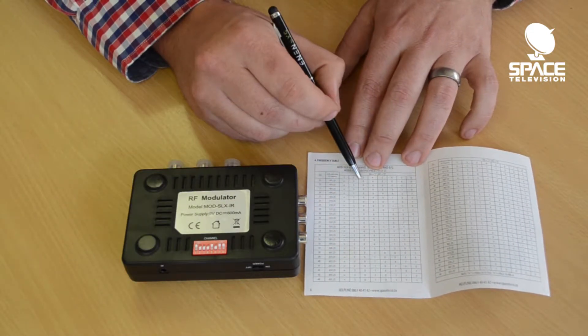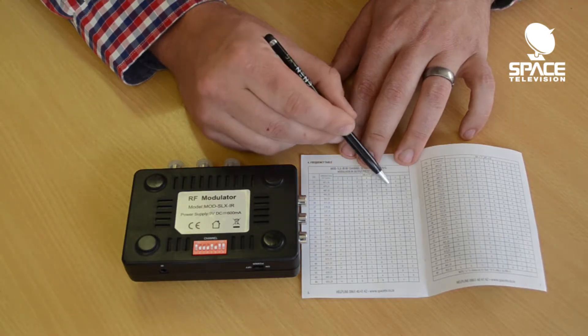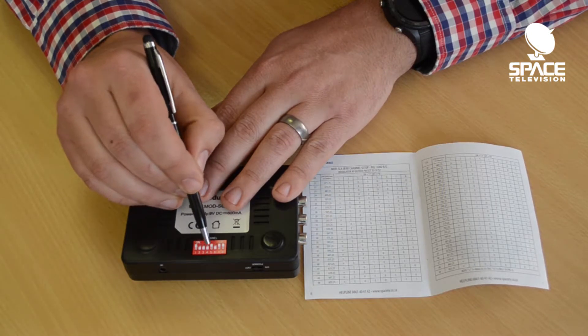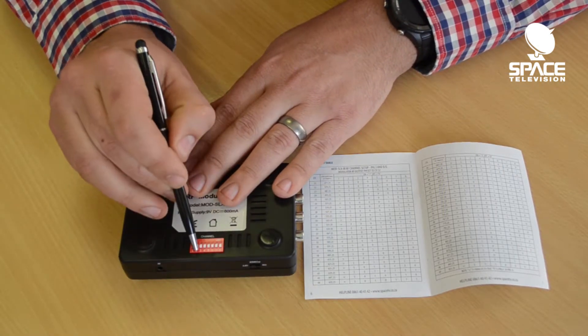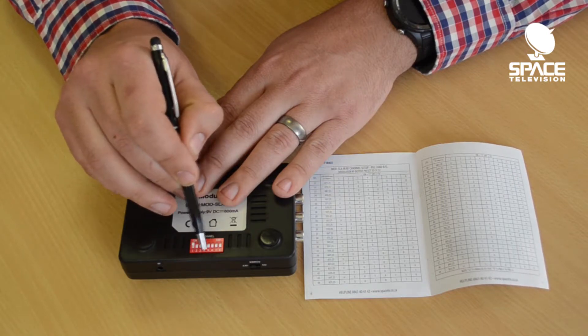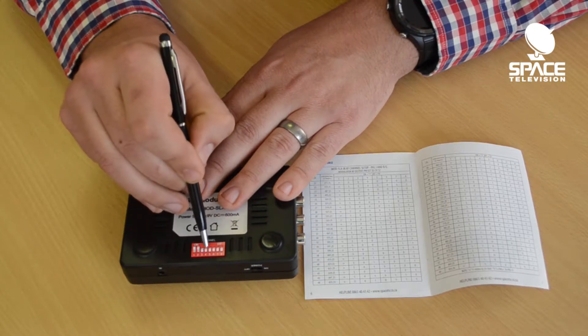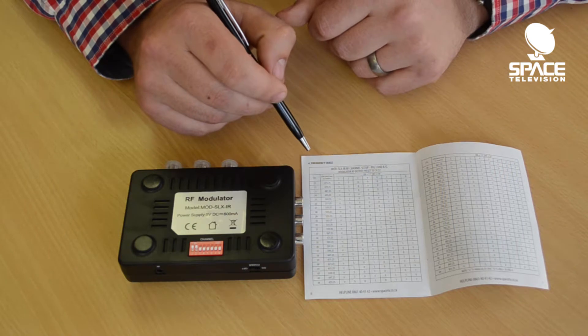So to put it onto channel 21, we must make it 0 0 0 0 0 0. That means down, down, down, down, down, and down, because down is off and up is on. Down is 0, up is 1. So just down, down, down, down, down—that's channel 21.